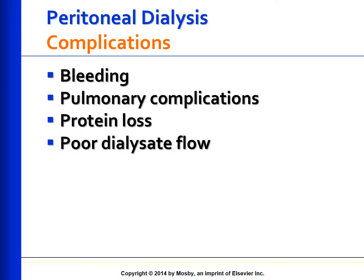Bleeding: The first few exchanges may have pink or slightly bloody effluent. Bloody effluent over several days, or the new appearance of blood in the outflow, can indicate active intraperitoneal bleeding. Monitor for hypovolemia and hemoglobin and hematocrit levels.